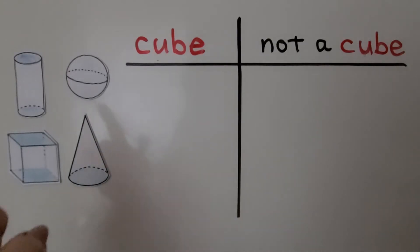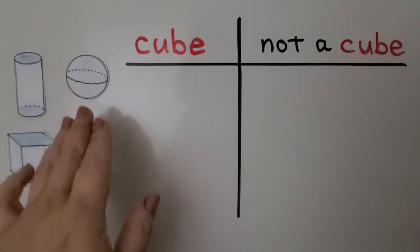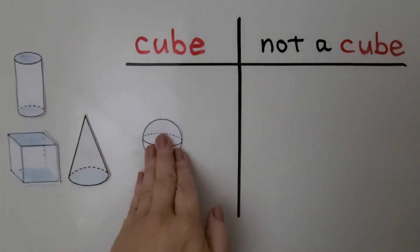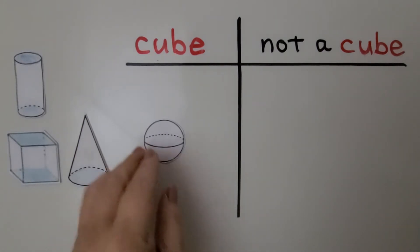Here we have some three-dimensional shapes, and we can separate them into cube and not a cube. A cube has six flat sides. Is this a cube? Well, I don't see any flat sides, so that's not a cube.